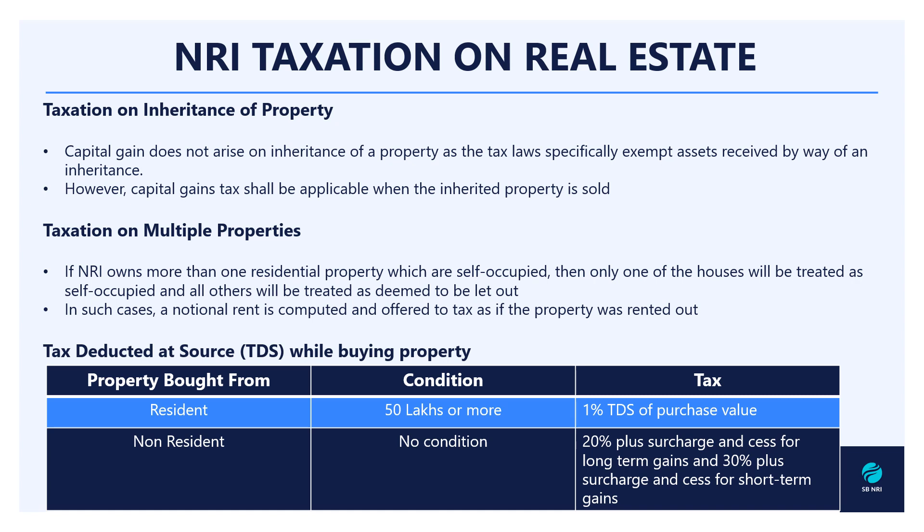If an NRI owns more than one residential property in India, and all are self-occupied, only one of the houses will be treated as self-occupied. The remaining properties will be treated as let out, regardless of whether they are actually rented. In such cases, a notional rent is computed and offered to tax as if the property was rented out. That is how taxation is handled on multiple properties.